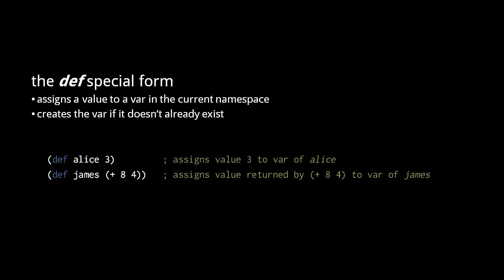Here, we store the result of a function call. This call to plus returns the value 12, which is then stored by def in the var mapped to the symbol James in the current namespace.